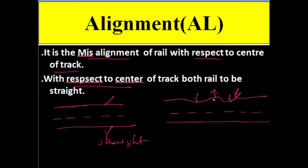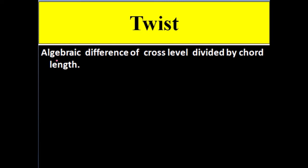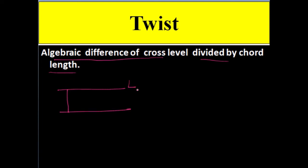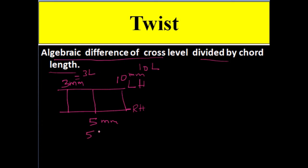Now let us go through the next concept: twist. Twist is the algebraic difference of cross level divided by chord length. Cross level at a location can be, for example, 3L, 5R, or 10L. To calculate twist algebraically, we assign signs: left is taken as negative and right as positive. So 3L becomes minus 3, 5R becomes plus 5, and 10L becomes minus 10.